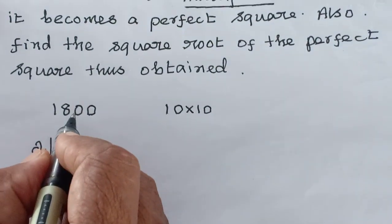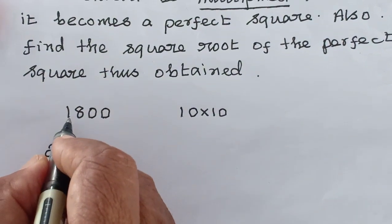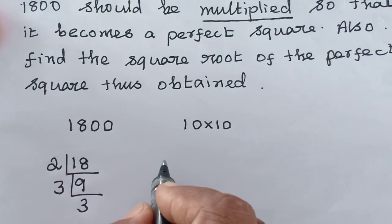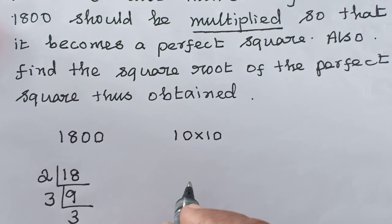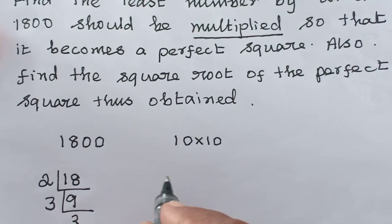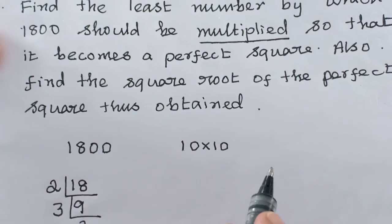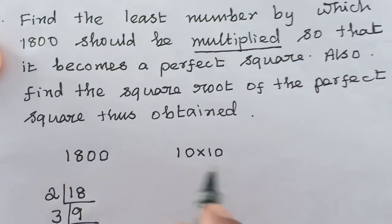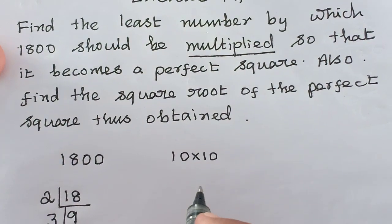So multiplied by 2 means what? This is 1800 into 2. Into 2. That is 3600. 3600. So mentally you can do. That is what? 60.